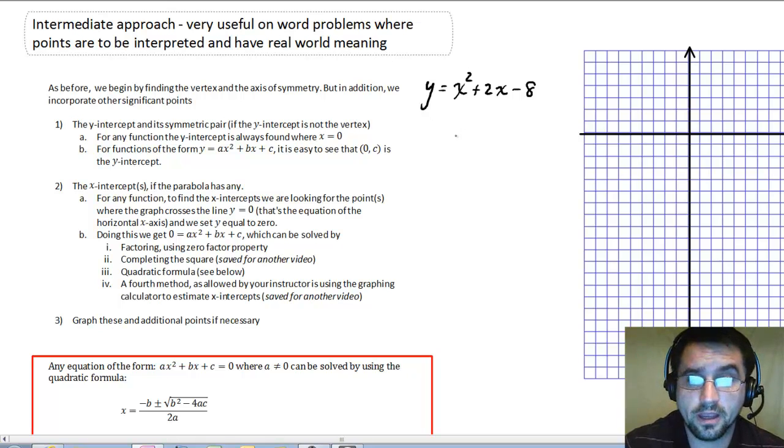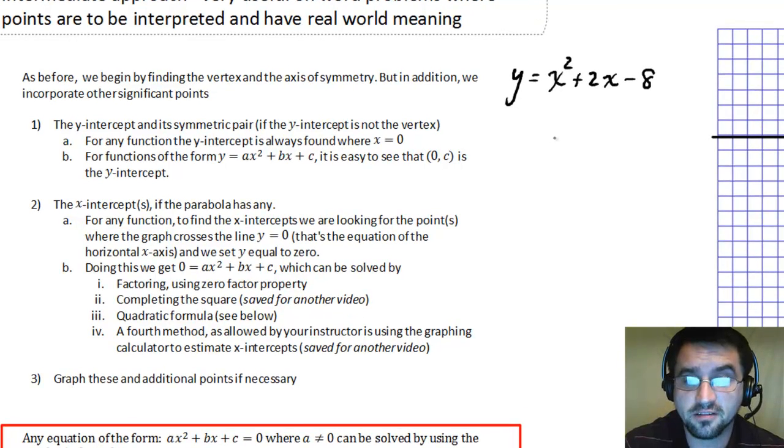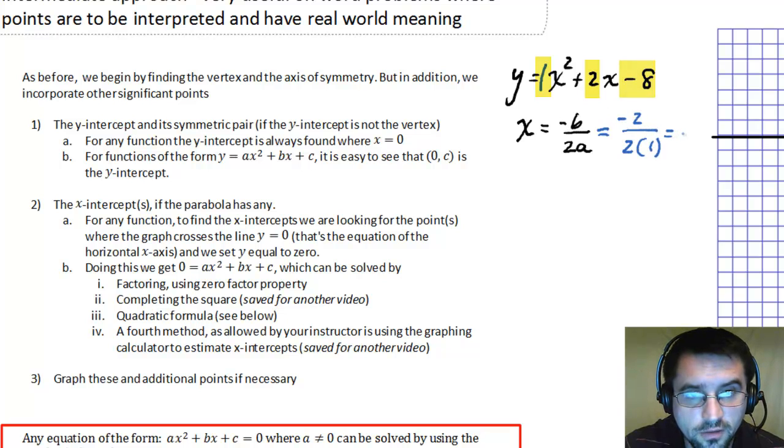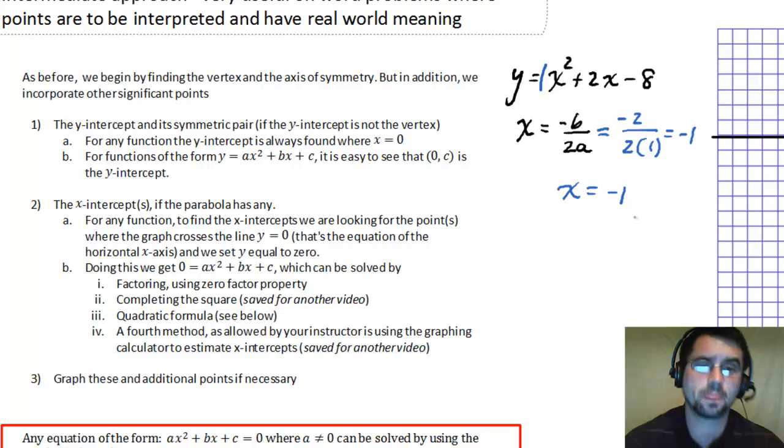First thing I want to do is I want to find the axis of symmetry. So the axis of symmetry is understood to be at x equals negative b over 2a. Whenever we have a parabola or a quadratic in terms of x, then the axis of symmetry for it will be at x equals negative b over 2a. So these values up here are important. a is 1, b is 2, c is negative 8. We're going to use a and b here. Negative b is negative 2 over 2a, 2 times 1, is negative 1.